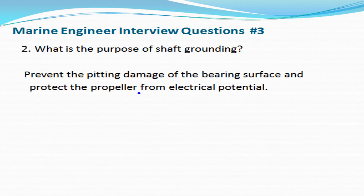This electrical potential accelerates cavitation of the propeller, especially at the tip. The electrical potential is generated between the shaft and the hull because a turning propeller is electrically insulated from the hull by the lubricating oil film and bearings.